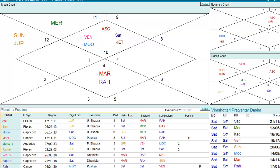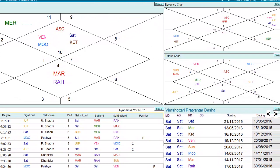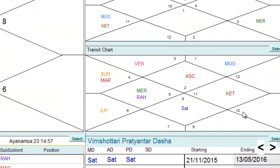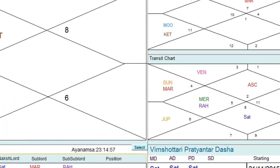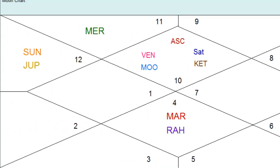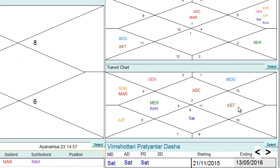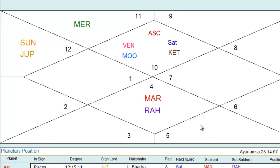Now we need to place the transit planets. Let's say we look at the 10th — is there any planet there? Then we go to the 11th and you can see Ketu is there, so we need to consider Ketu in the second house from moon. On the opposite side, Rahu and Mercury are in the fifth, so we place Rahu and Mercury in the eighth house from moon.